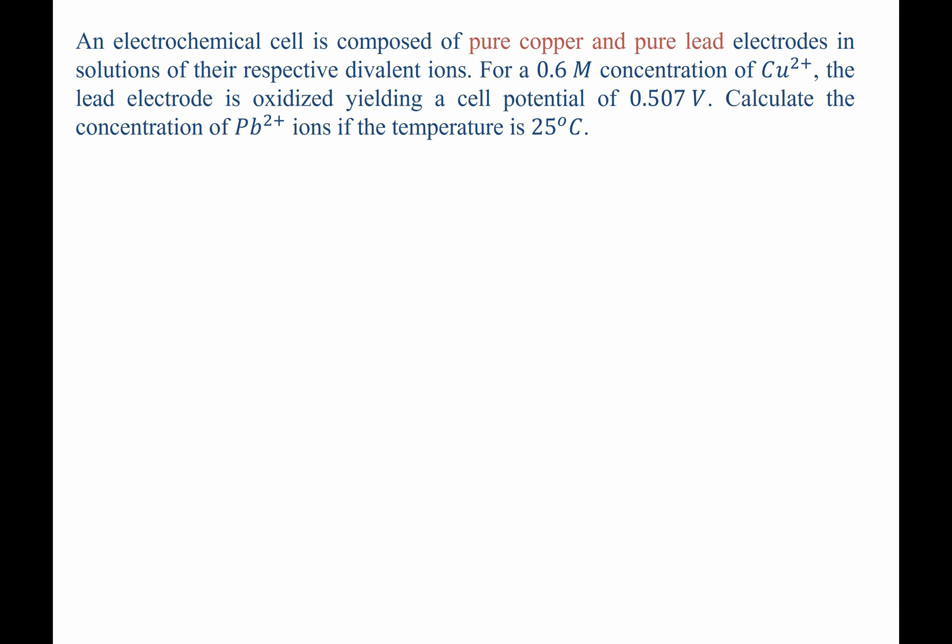An electrochemical cell is composed of pure copper and pure lead electrodes in solutions of their respective divalent ions. For a 0.6 molar concentration of copper 2 plus, the lead electrode is oxidized, yielding a cell potential of 0.507 volts. Calculate the concentration of lead 2 plus ions if the temperature is 25 degrees Celsius.